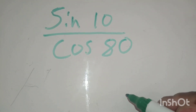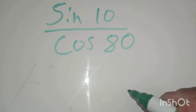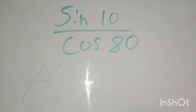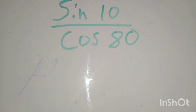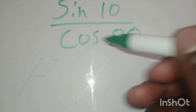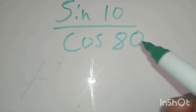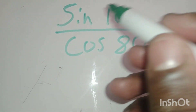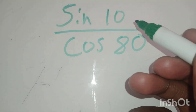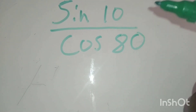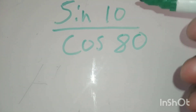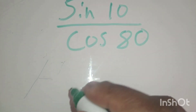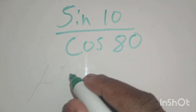We're given sin(10) over cos(80) and we have to solve it without a calculator. We see that 10 plus 80 is 90, so we definitely know we have to use co-ratios. You can choose to change cos(80) into cos(90 minus 10), or you can change sin(10) into cos(90 minus 80) — we can change either one. I'm going to do both so you can see how easy it is. Let me change the top first.